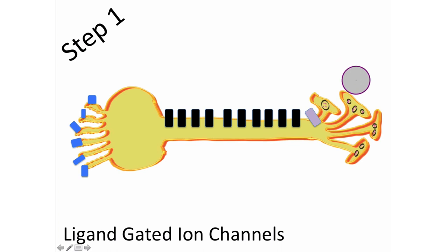There are a number of things left out of this discussion, like cytoplasmic resistance and current leak, which we'll talk about in a subsequent video. But that's the essence of the release of neurotransmitters from a neuron.